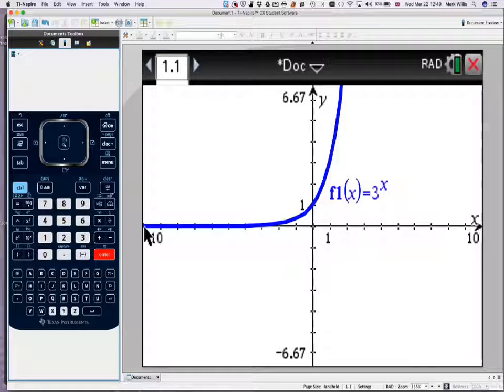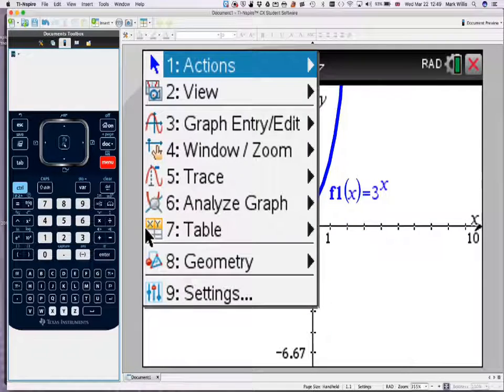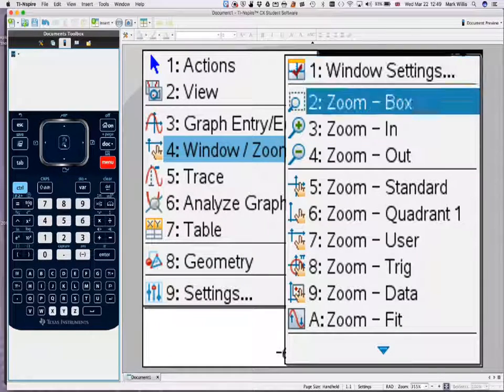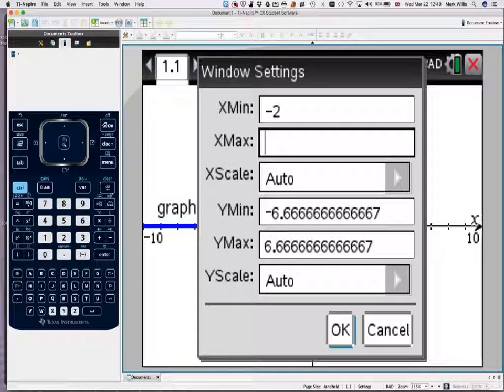And then set the window. Now, because I want a domain from minus 1 to 3, maybe it's better to set the window to something slightly bigger. So I'm just going to go to minus 2 to 4, and then press OK.